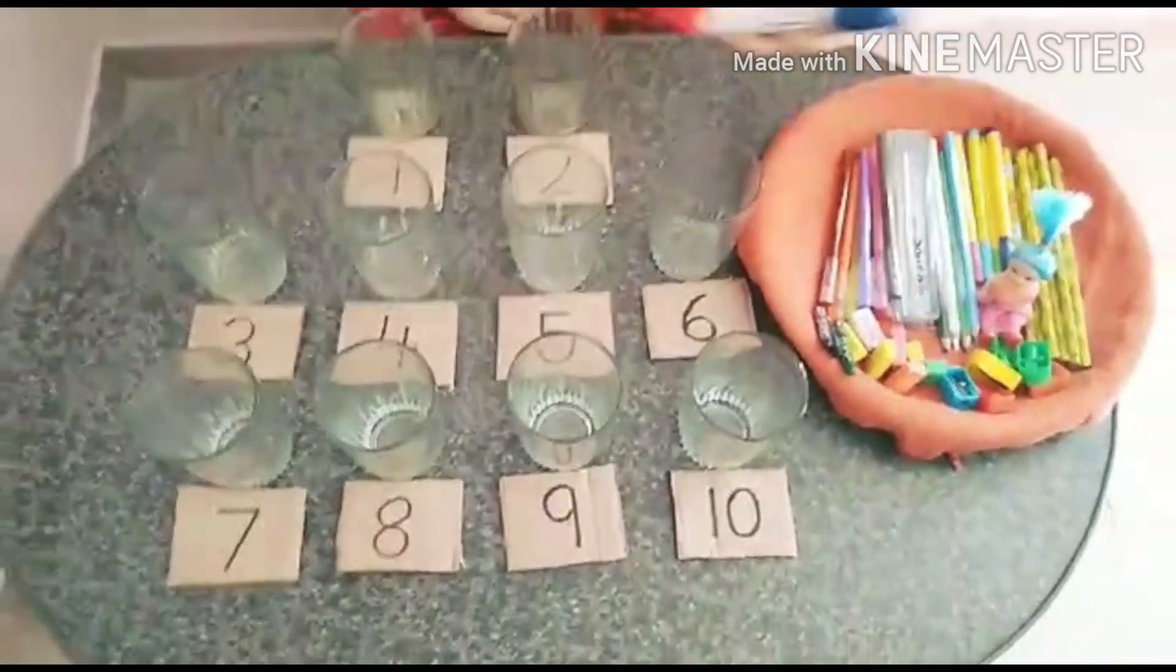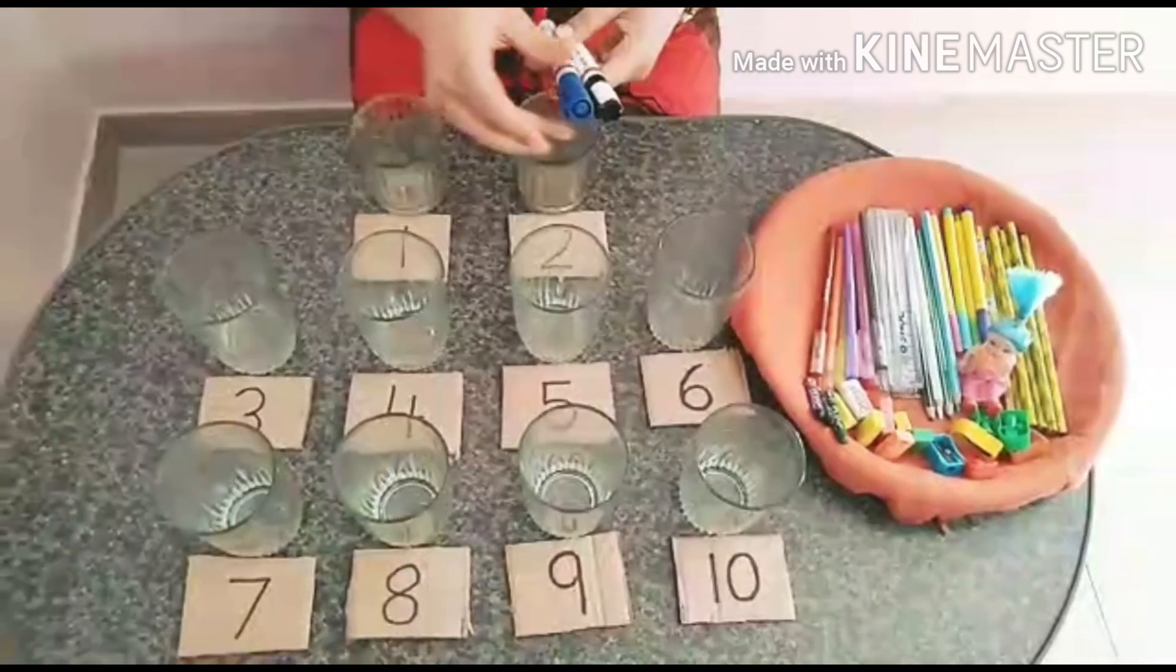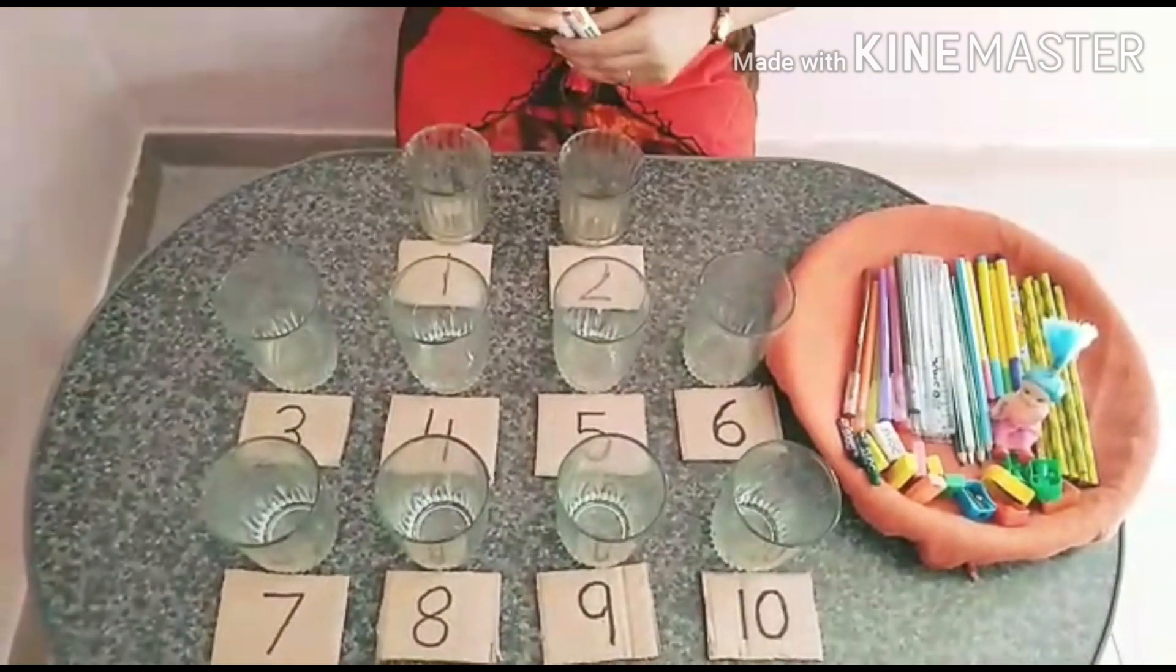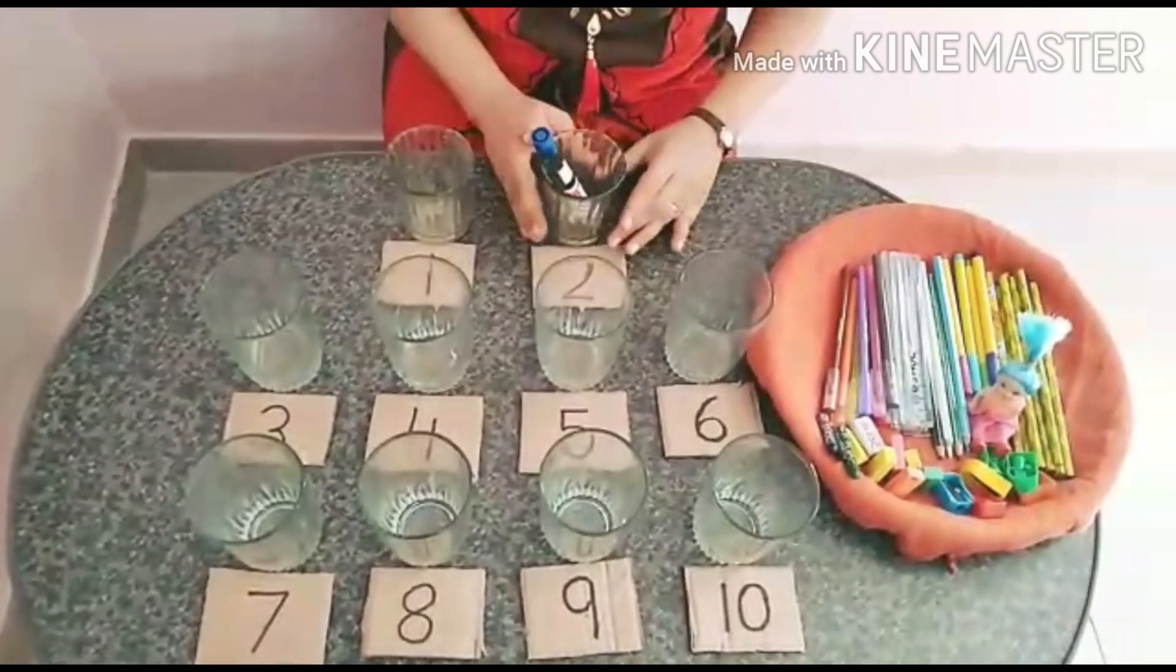First of all, take one thing. Here I have markers. Let's start counting. One, two. Where is the number two? Find out the number two. Here. Very nice.